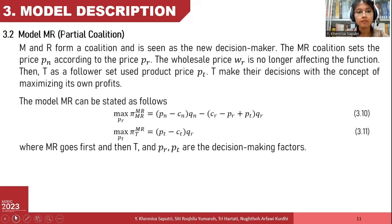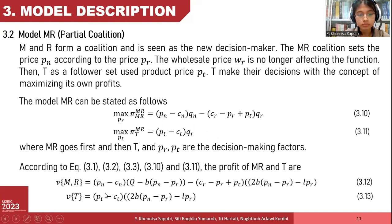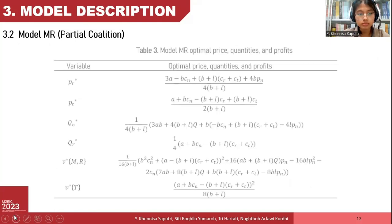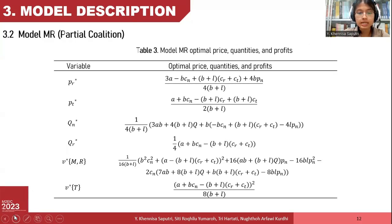The first partial coalition is between the OEM and the retailer. Shown on screen is the Shapley value of this model. By using the Stackelberg game with backward induction procedure, we obtain the optimum solution for this model.